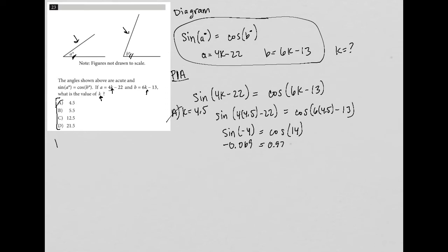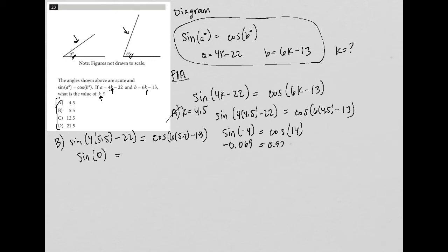Trying choice B, where k equals 5.5: sine(4×5.5 − 22) = cos(6×5.5 − 13), which becomes sine(22 − 22) = cos(33 − 13), so sine(0) = cos(20). The sine of 0 is 0, but cosine of 20 is about 0.94 — not true. So we've eliminated both A and B.